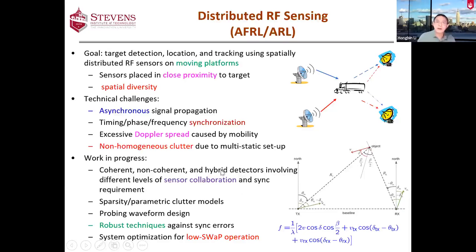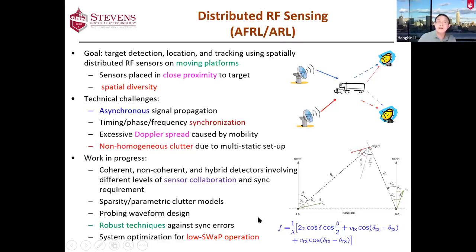Another issue is related to excessive Doppler spread because of the mobility, so the signal has a lot of Doppler effects that we have to deal with. There is also the problem of non-homogeneous clutter due to the multi-static geometry, which automatically generates interference depending on the location of the disturbance and scatterers. There is a range dependency that makes it very difficult to estimate their characteristics for clutter mitigation. What we are doing right now is working on coherent, non-coherent, and hybrid detectors involving different levels of collaboration among the sensors.